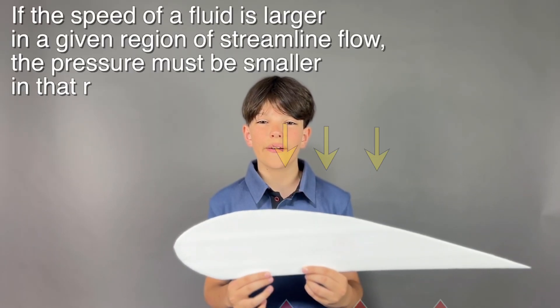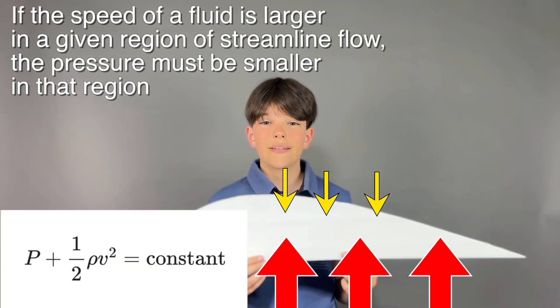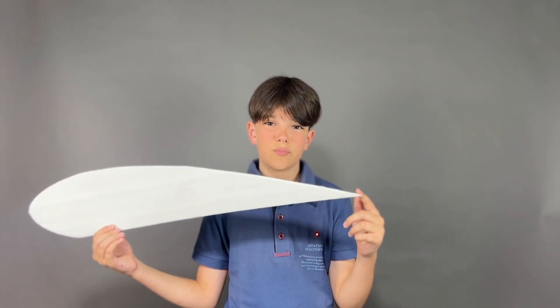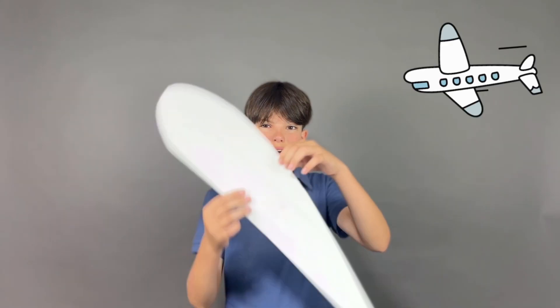And faster moving air has lower air pressure according to Bernoulli's equation. This theory is wrong because who said the particles have to meet at the same time? Not all wings have this form. And what about planes that can fly upside down?